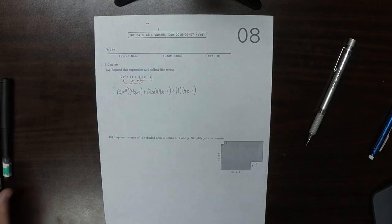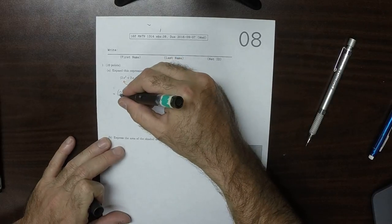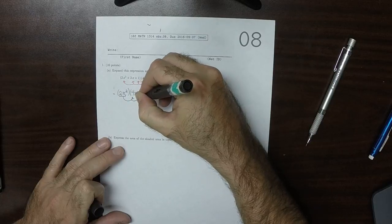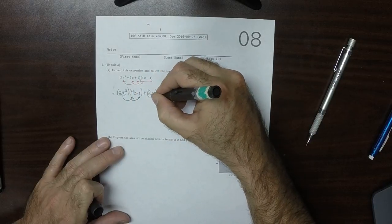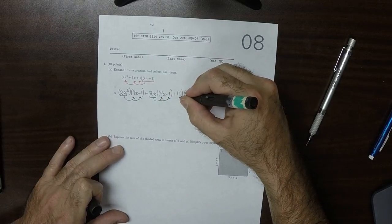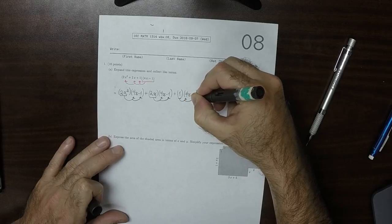And now the distribution goes the other way, so now this one will distribute to that one and to that one, and this one distributes to that one and to that one, and this one distributes to that one and to that one.